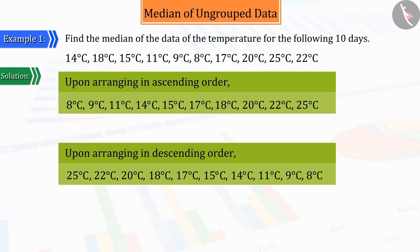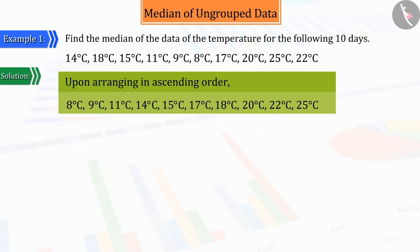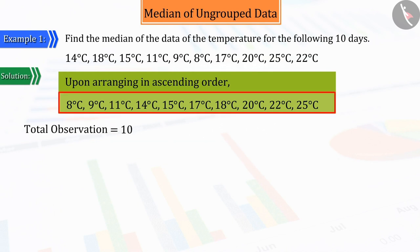Then, we assess the observations and find whether they are even or odd. As you can see, the total number of observations given is ten, which is even.